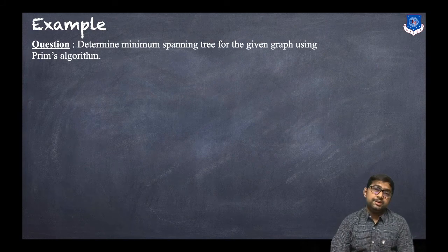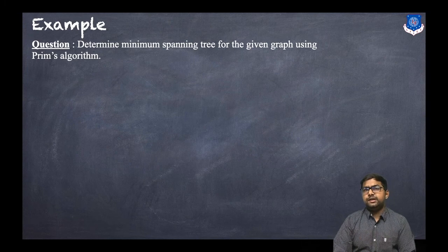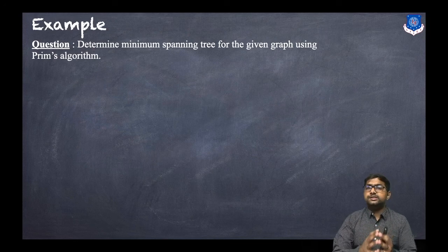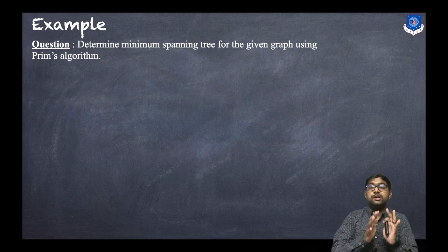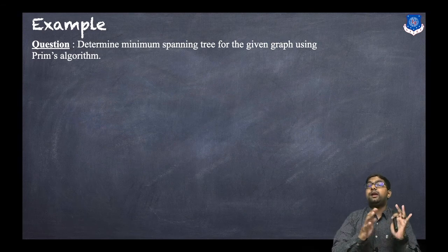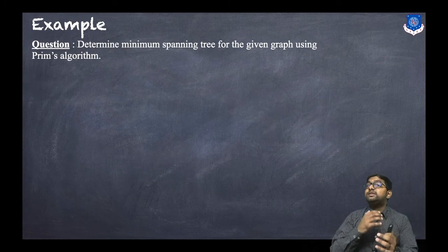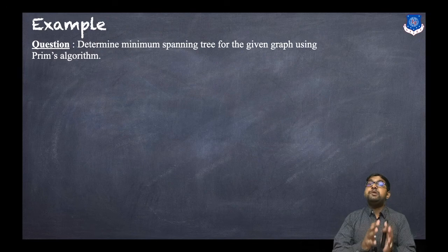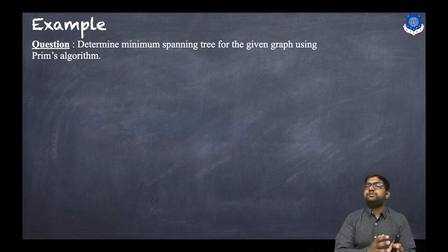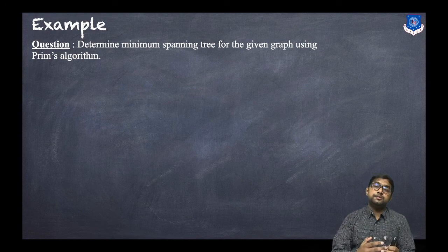First of all, what is a spanning tree? A tree is an acyclic graph. A spanning tree is a tree that covers all the vertices in such a manner that all are connected. A minimum spanning tree is a spanning tree having the minimum weight. We will use Prim's algorithm to find a minimum spanning tree, or MST.